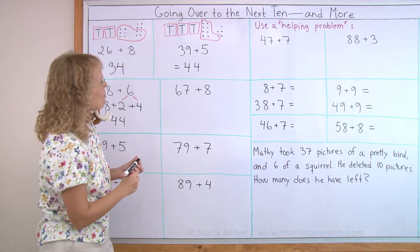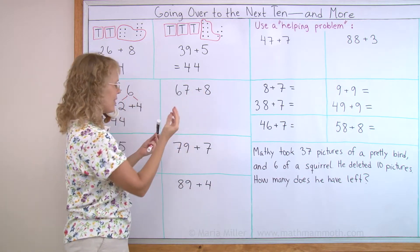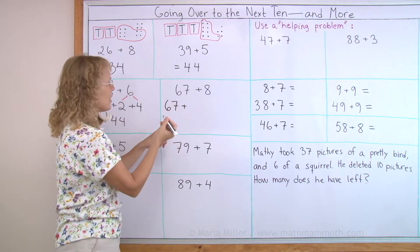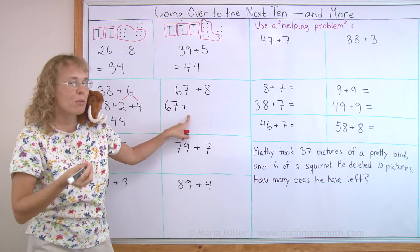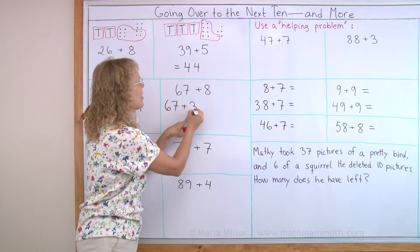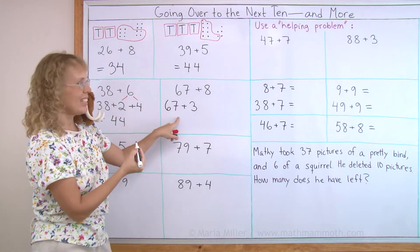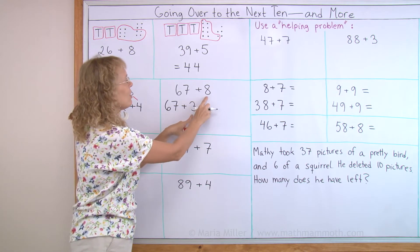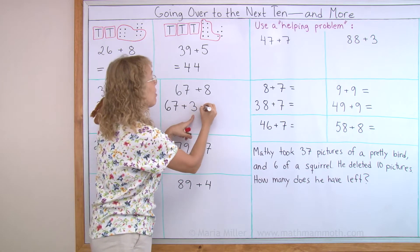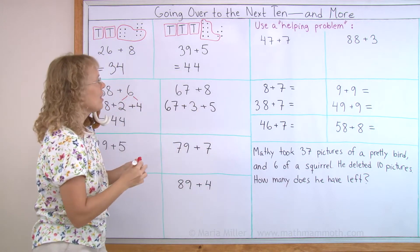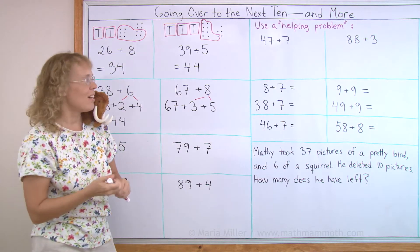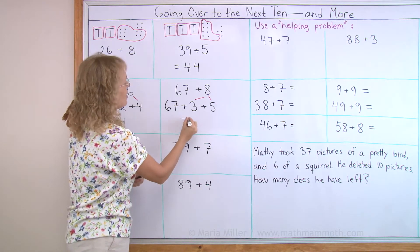Let me show you that same thing again. 67 plus 8. If you think of first filling the next 10, 67 plus how many more would make the next 10? You have 7, you need 3. So this would make 70. But since you need to add 8, it's not enough to add just 3. You need to add 5 more. Because 8 is 3 and 5. And now we have 70 here and 5 here, which is 75.